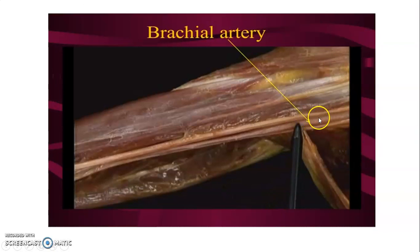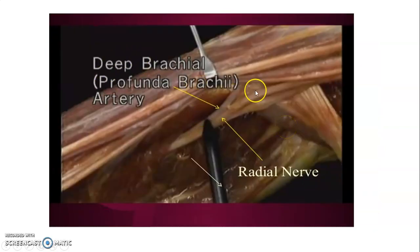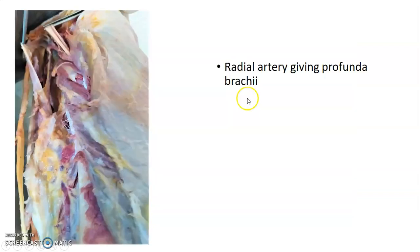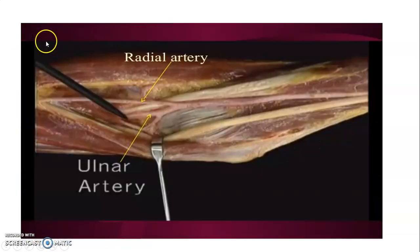This image shows the brachial artery with the veins around it. You can see the brachial artery and the radial nerve, and where the brachial artery has given off profunda brachii — so profunda brachii and the radial nerve together around the radial groove. You can also see the radial artery and ulnar artery as the terminal branches.